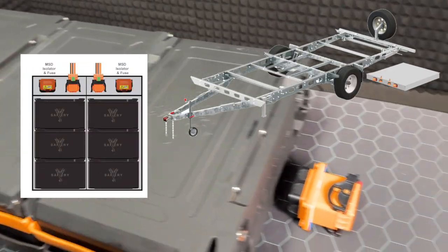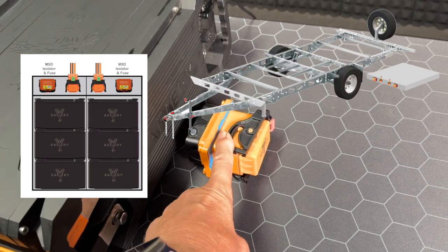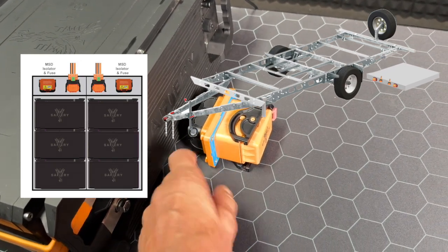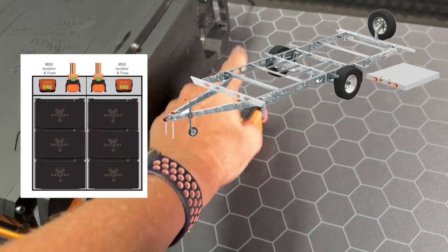For example, we'd put the MSD that you've seen before. This is both an isolator and a mega fuse that sits up here. The positive strap goes from there to here, going out, and that battery pack is completely isolated.